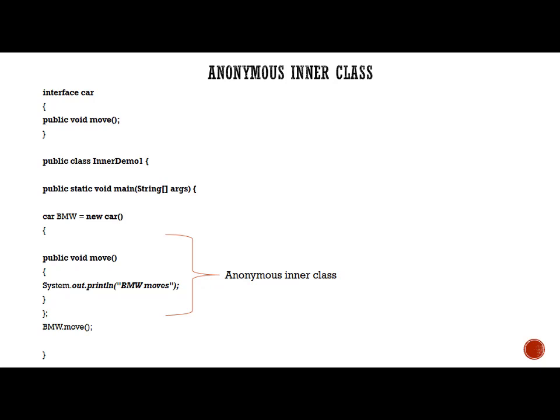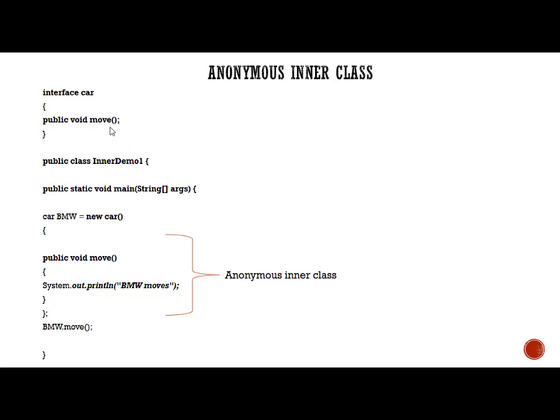The third type is the anonymous inner class. To understand it, consider an interface called car which has an abstract method called move. Normally, to implement this interface you would subclass it — create a class that implements the interface and override the move method. But there is an alternate way: without subclassing, you can still use and override the move method directly.